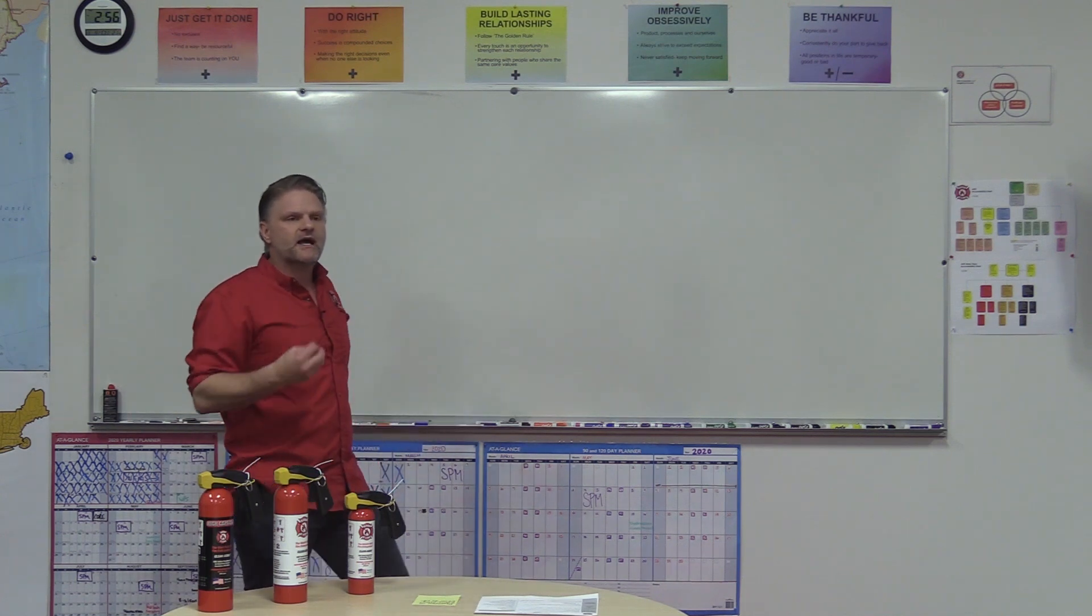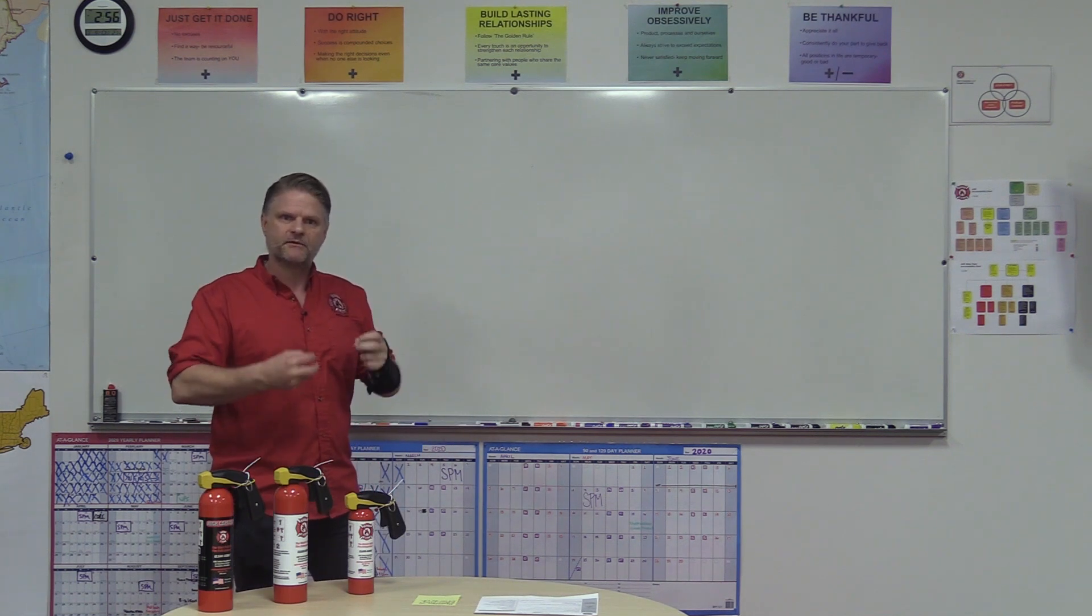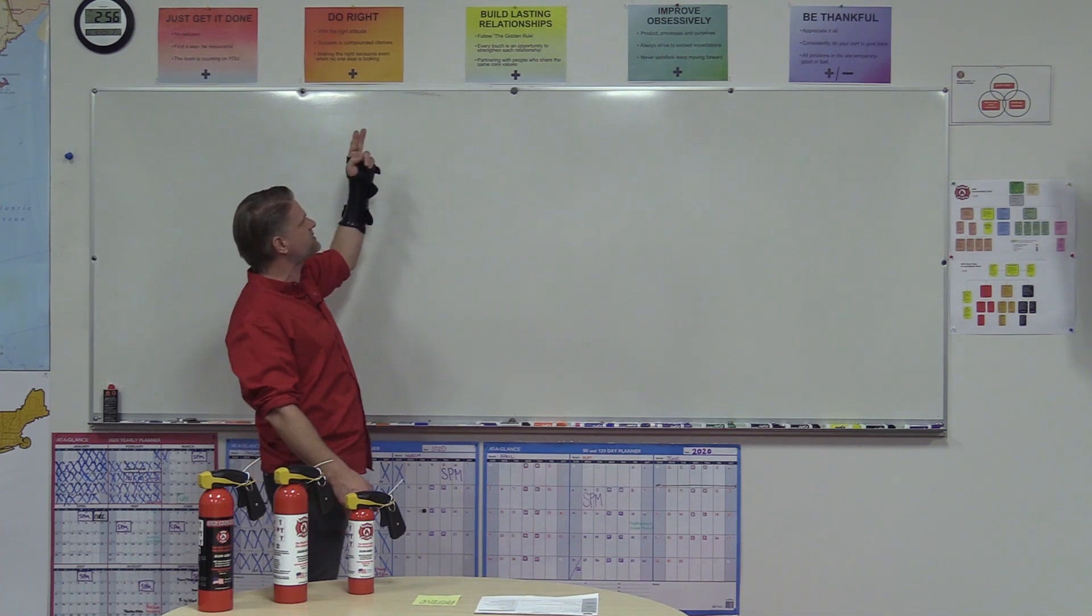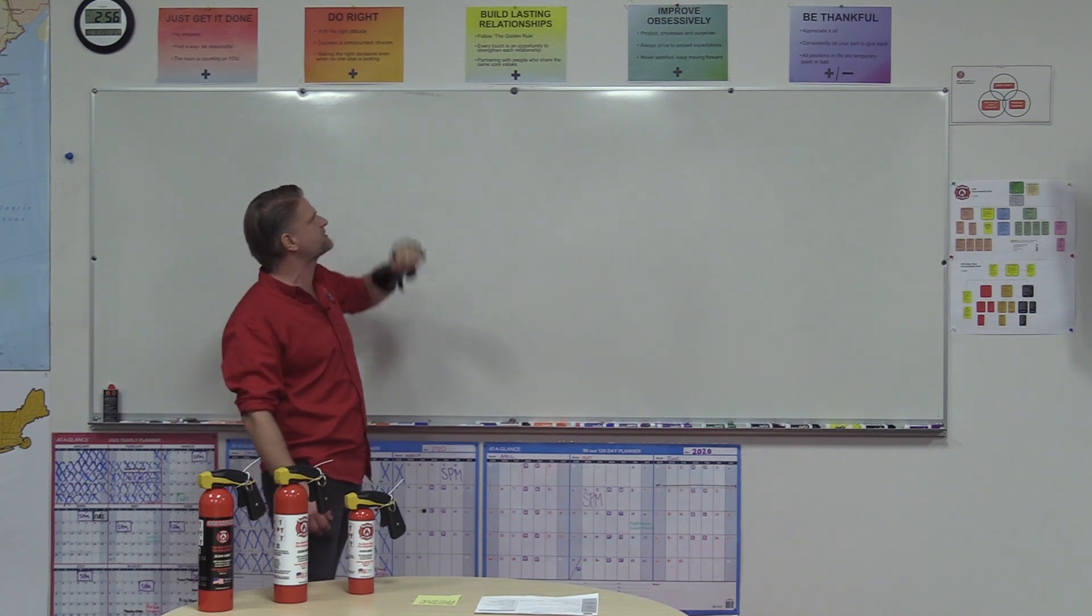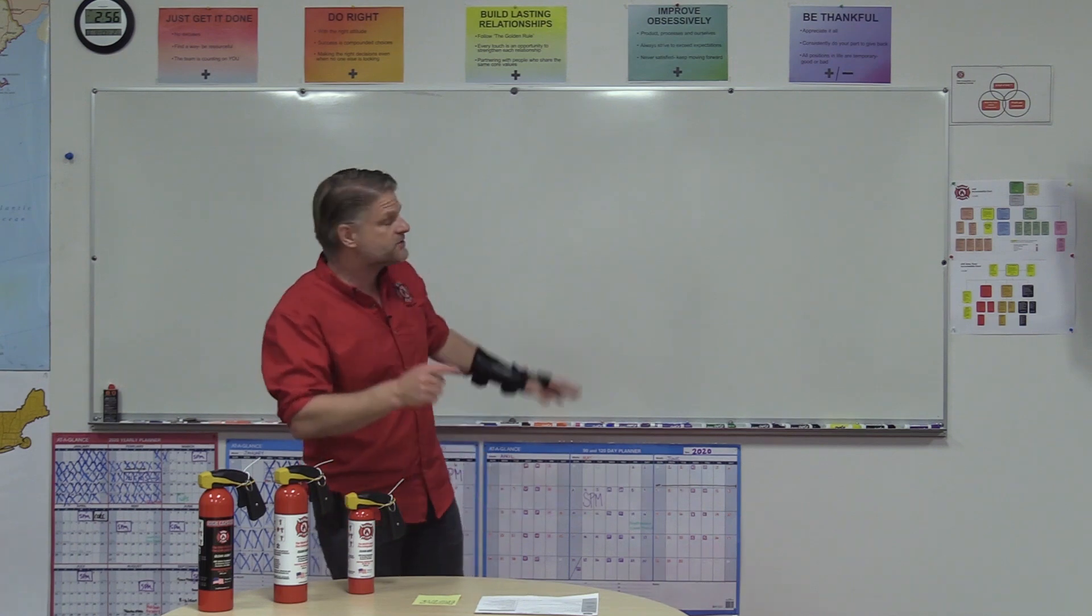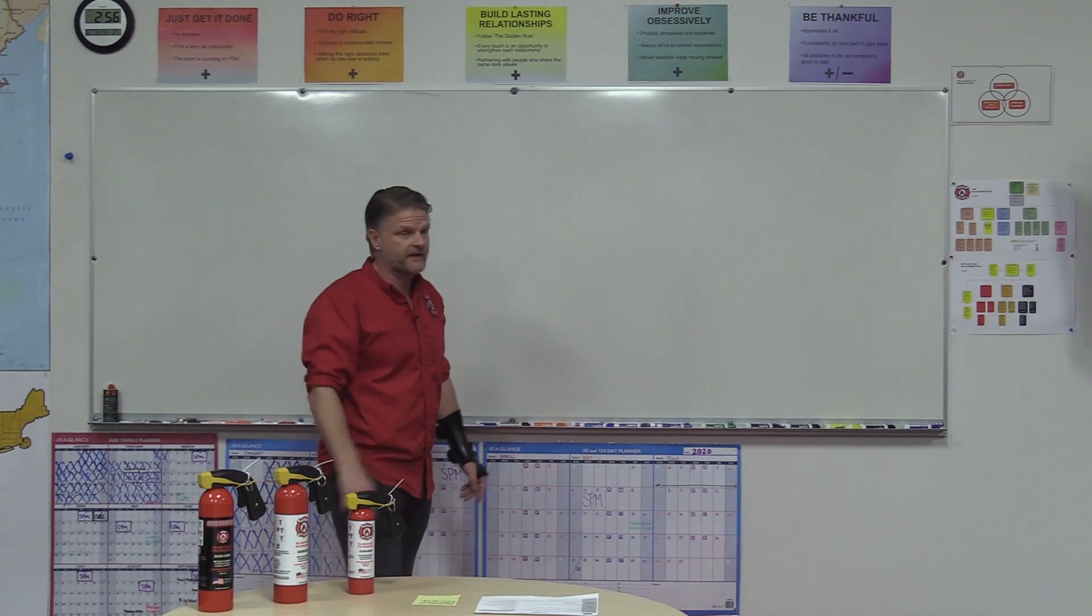Build lasting relationships. It's in line with a biblical principle. Follow the golden rule. Every touch is an opportunity to strengthen each relationship. Partnering with people who share the same core values. At the end of the day, business is nothing more than effective people relations, so you must be in line with that.